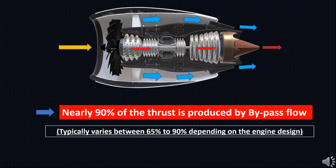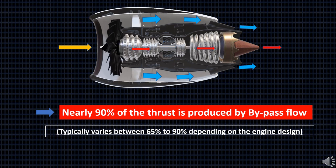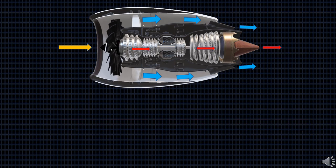And 10 to 15 percent is produced by the core air flow. Since the majority of the thrust is produced by the bypass air and no energy is added to the bypass flow, the turbofan engines have exceptional fuel efficiency.